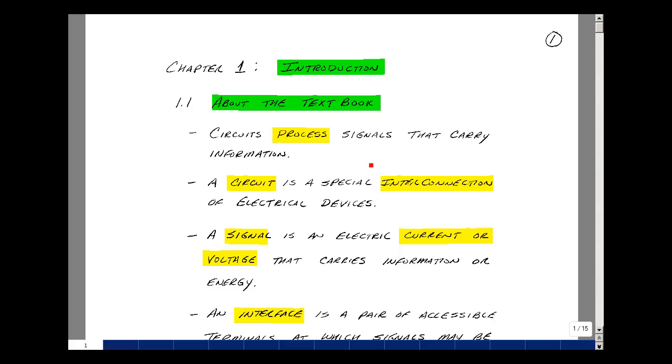Circuits process signals that carry information. A circuit is a special interconnection of electrical devices, and a signal is either a current or a voltage that carries information or energy.